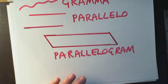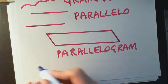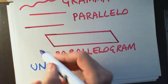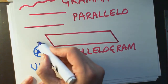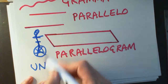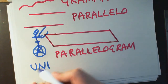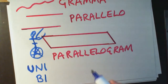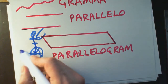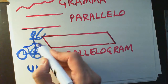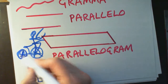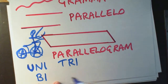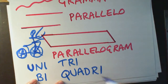'Uni' means one — for example, a unicycle has one wheel. 'Bi' means two — a bicycle has two wheels. 'Tri' is three, which we've seen already. And 'quadri', which we've seen already, means four. We're going to be using these words to describe different figures.